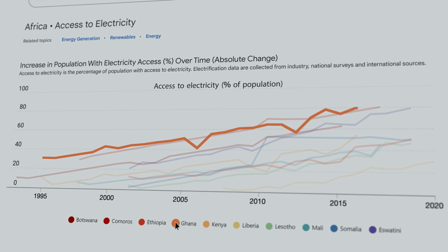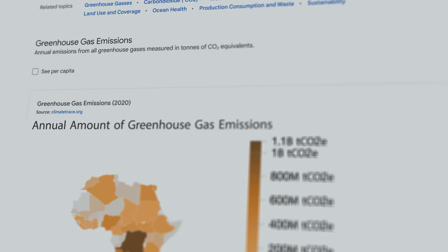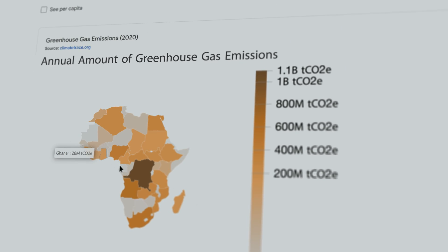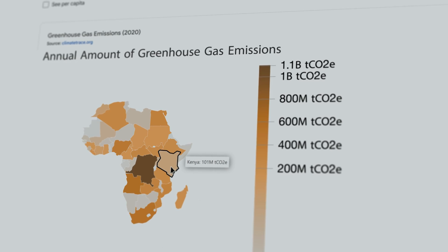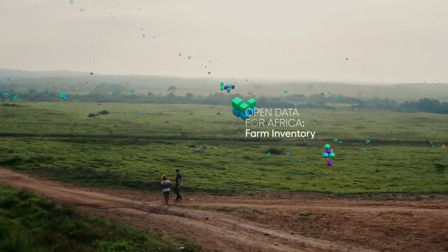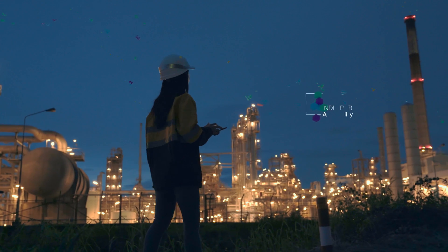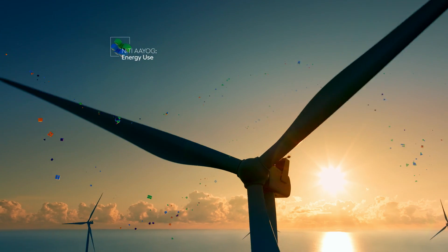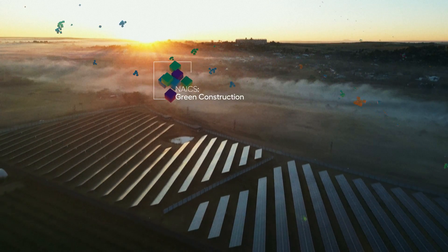I wonder what the impact of this on their greenhouse gas emissions has been. From these charts, we can see that Ghana's greenhouse gas emissions have gone up substantially more than Kenya's. These observations are the beginning of a journey to better understand how we could increase access to electricity without proportionately increasing greenhouse gas emissions.